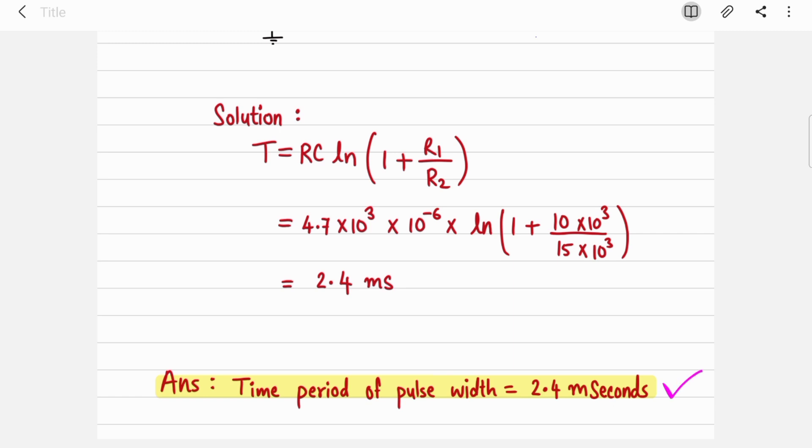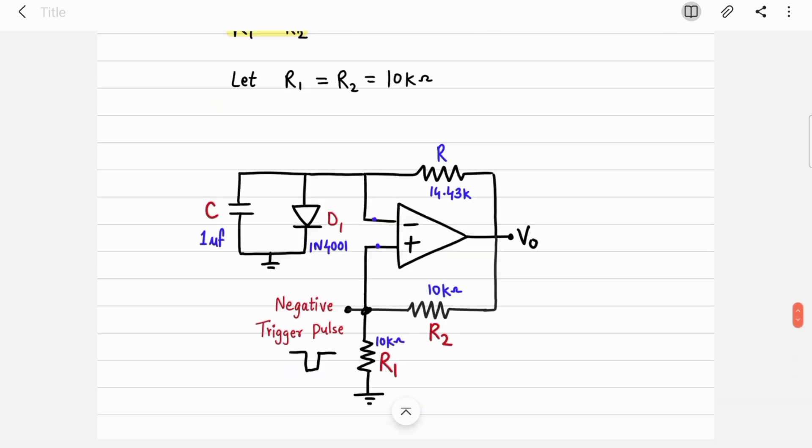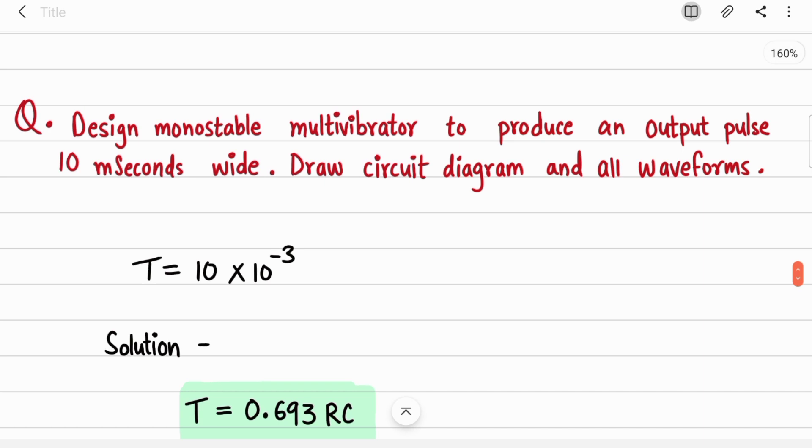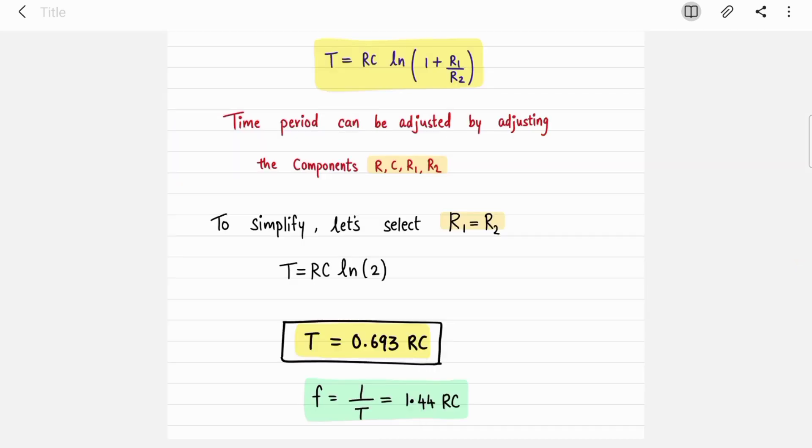So these types of questions are also very common. They can give you a circuit diagram and tell you to find out pulse width of output, or else they can give you pulse width like we saw in the first question - it was opposite. They have given you the time period of pulse width and you have to design the whole circuit. So we have covered both the cases.